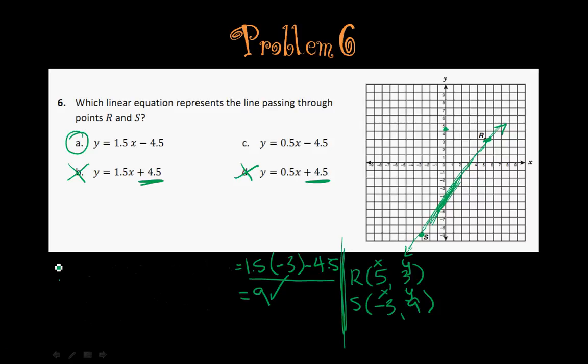Okay, so for C, I'm going to start with point R again. I plug in 3 for my y, equals 0.5 times 5 for my x, minus 4.5. So 5 times 0.5 is 2.5.